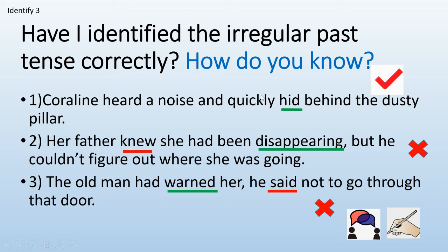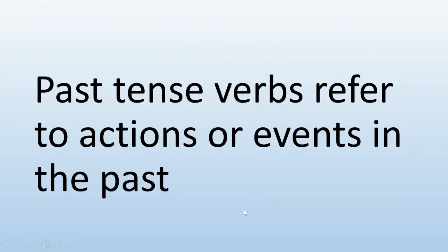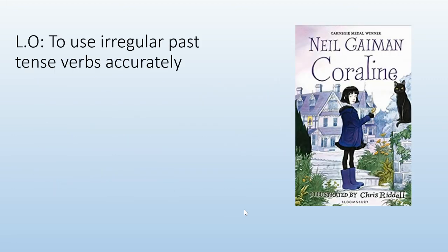The ones I should have highlighted are knew — to know, past tense I knew — and say becomes said. So past tense verbs refer to actions or events in the past. Our learning objective is to use irregular past tense verbs accurately. Pause the video and take a moment to write that down.